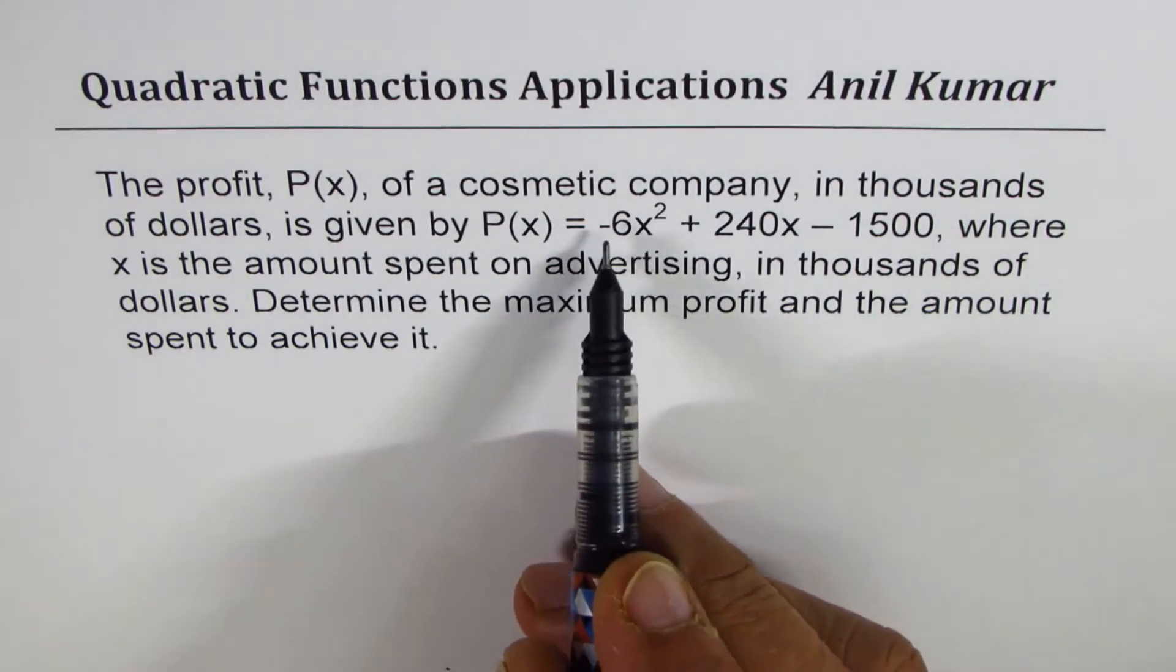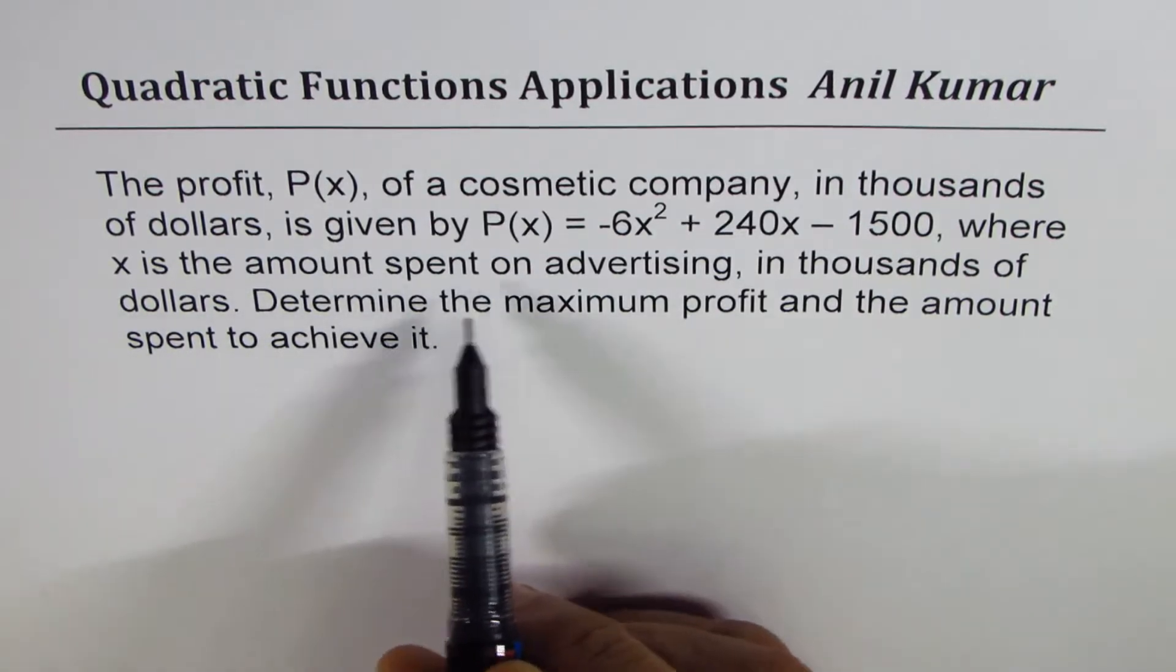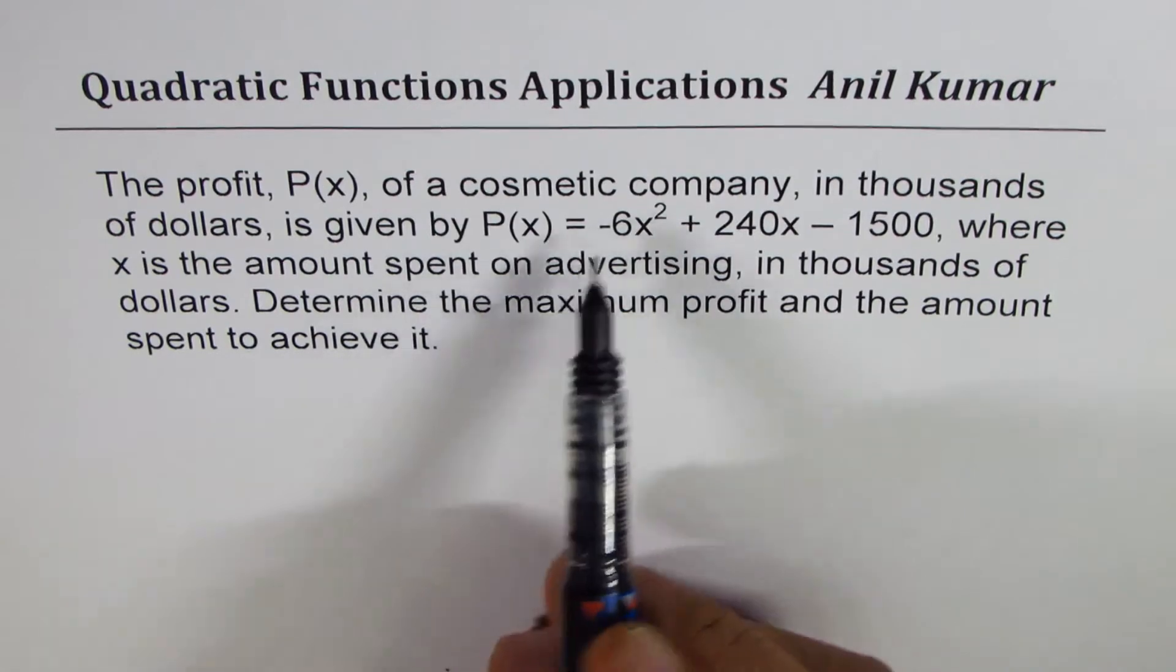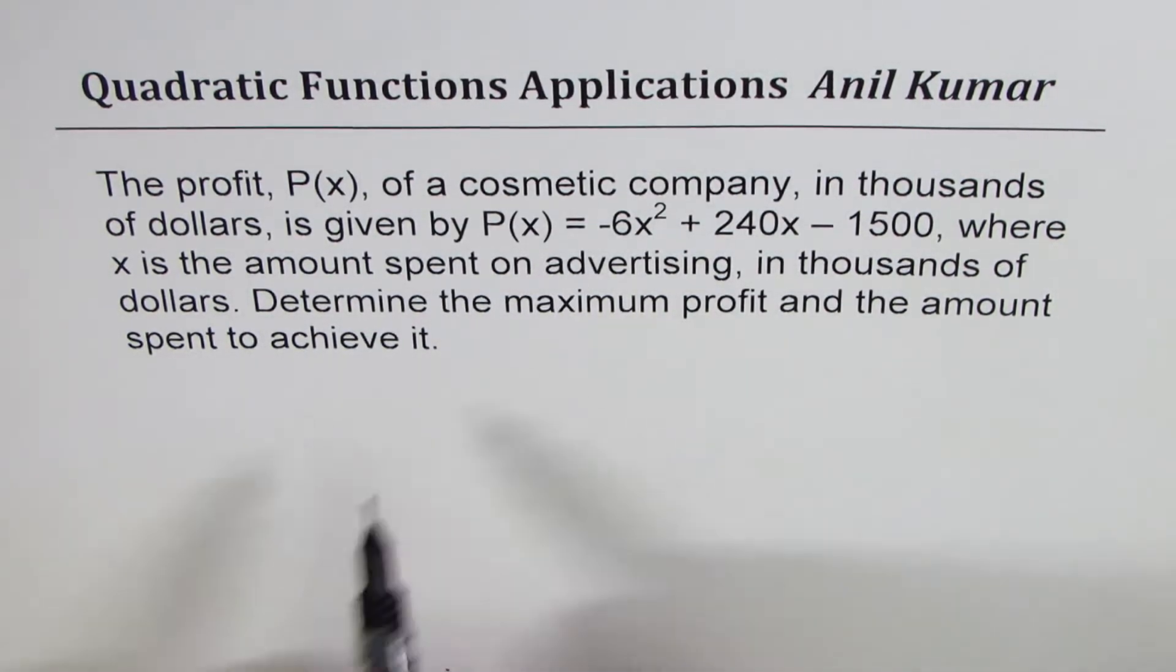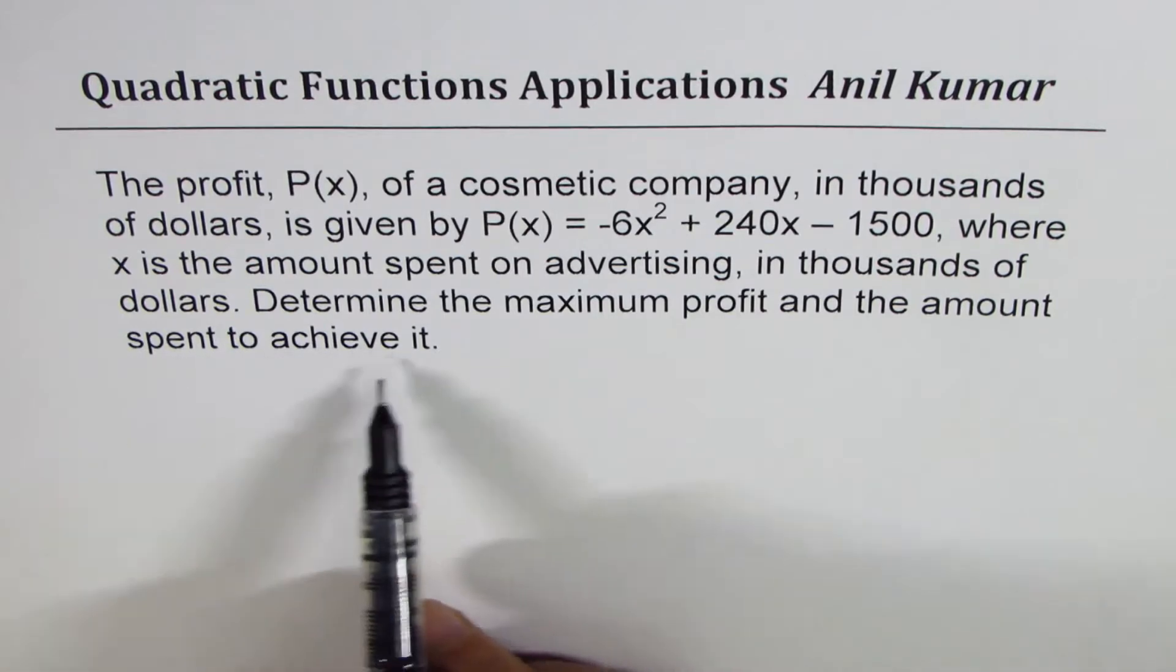P(x) = -6x² + 240x - 1500, where x is the amount spent on advertising in thousands of dollars. So both are in thousands of dollars. Determine the maximum profit and the amount spent to achieve it.